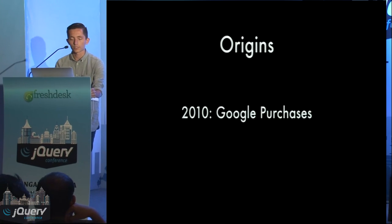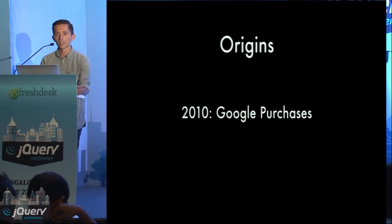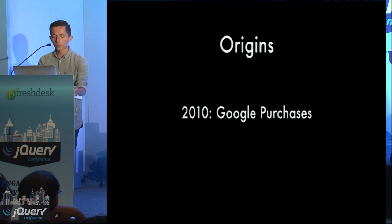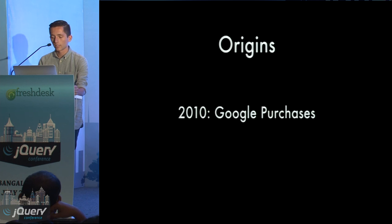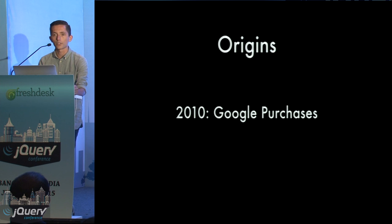Before we dive in, let's do a quick recap of where WebRTC came from. It all started in 2010 with Google acquiring the rights to a bunch of new video codecs. The most notable acquisition was a company called On2, which owned the VP8 codec — the codec behind WebM. Almost immediately after this acquisition, Google released the source code under a BSD license so anybody could use it without worrying about lawyers.